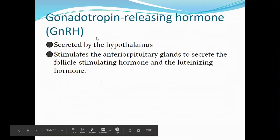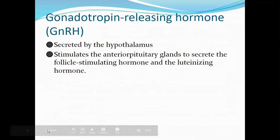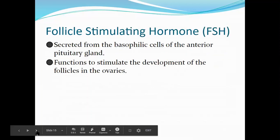The gonadotropin-releasing hormone functions to stimulate the anterior pituitary gland to secrete FSH and LH. The follicle-stimulating hormone is secreted by the basophilic cells of the anterior pituitary gland and functions to stimulate the development of follicles in the ovaries. Between FSH and LH, the FSH is released first.